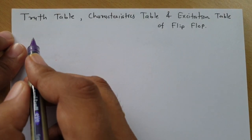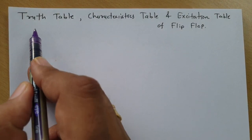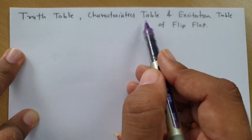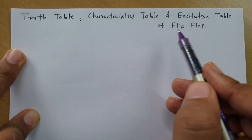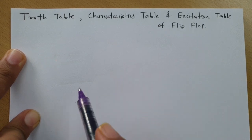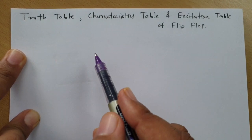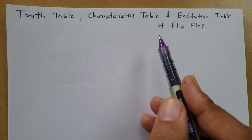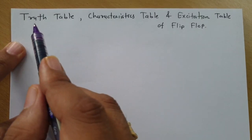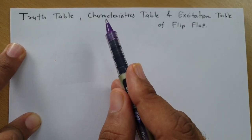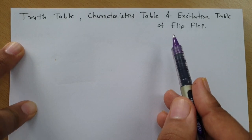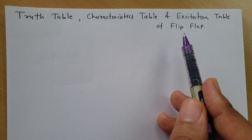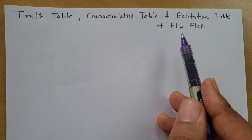Welcome to the digital electronics lecture series. I, Professor Ritesh Dulakia, am going to explain truth table, characteristic table, and excitation table of flip-flops in this video. After this video, I am going to explain different flip-flops in detail, so at that time I will not explain the meaning of these tables. Watch this video so that in future, when you study different flip-flops in detail, it will be easier for you to understand them.